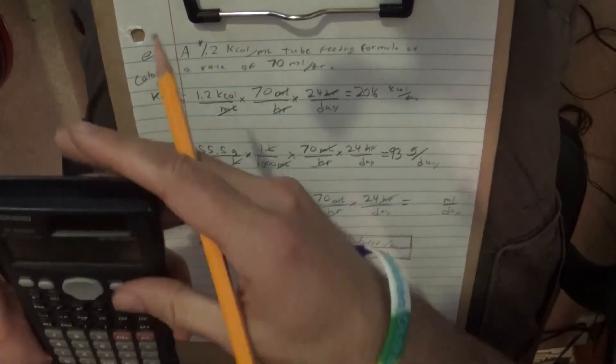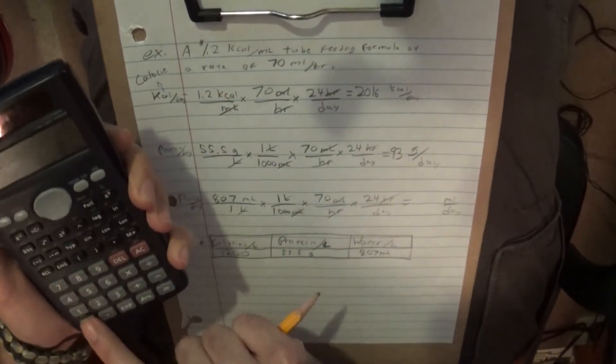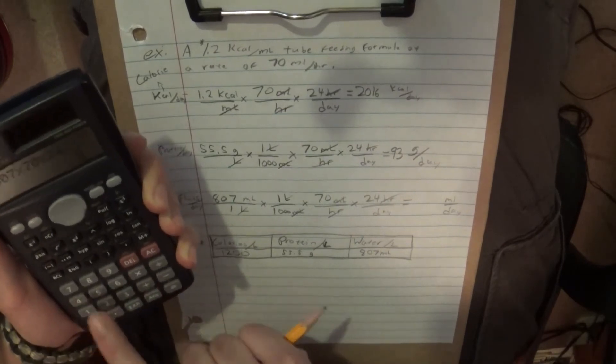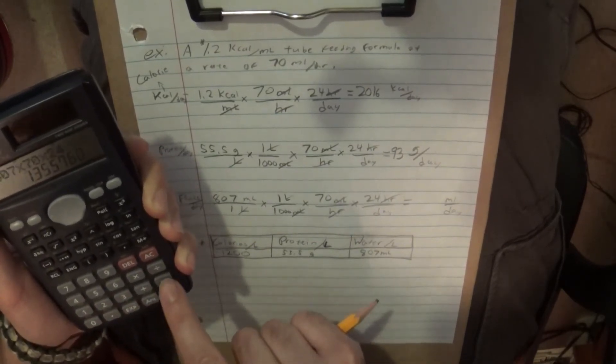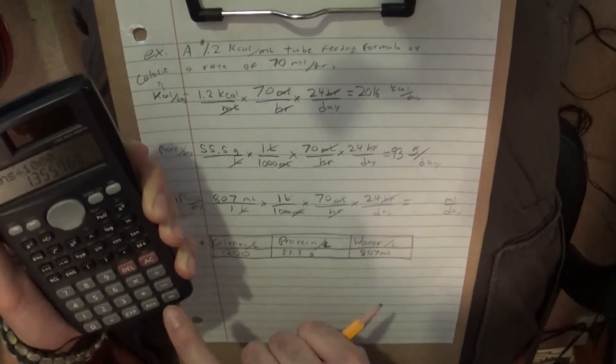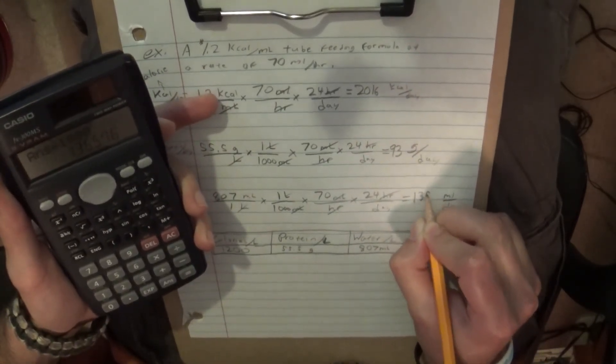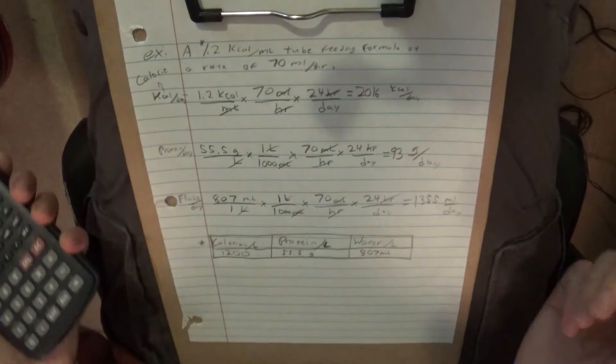Bada bing, bada boom. And that leaves us with 807 times 70 times 24 divided by 1,000. That leaves us with, let's just say, 1355 milliliters per day.